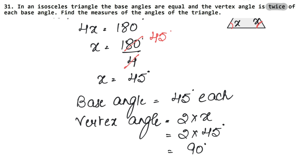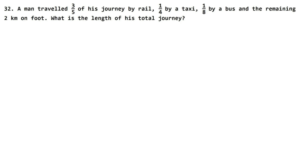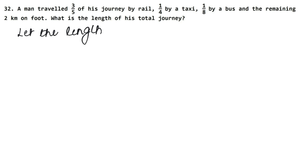Let's do the next question. A man travelled three-fifths of his journey by rail, one-fourth by taxi, and one-eighth by bus, and the remaining two kilometers on foot. We have to find the length of his total journey. We don't know the total journey, so we will consider it as x.